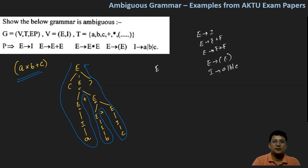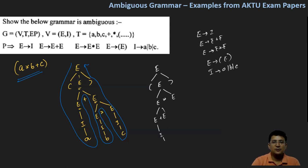Then let's say this E produces opening bracket E closing bracket. So let's say this E expands in leftmost derivation to E multiplied with E. And then this E expands to E plus E. Then this E resolves to I and this I produces A. So let's say E produces B and E produces C.